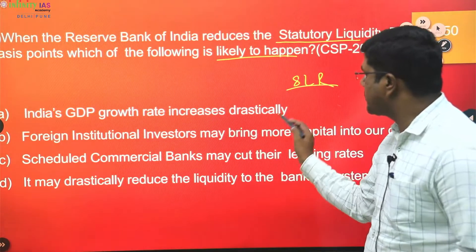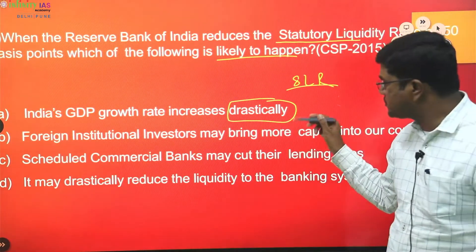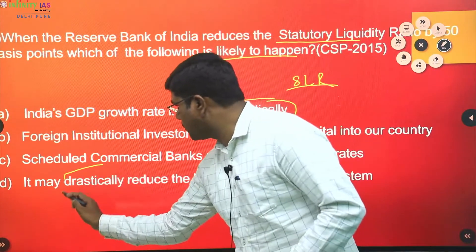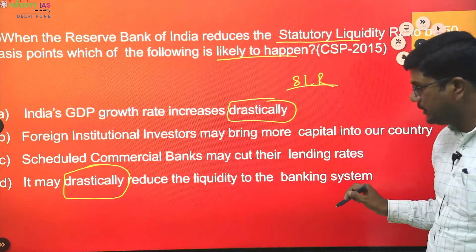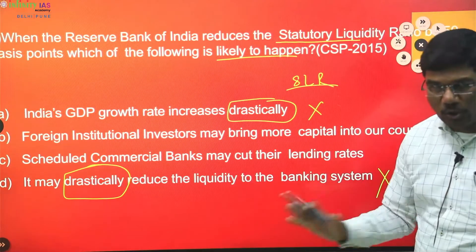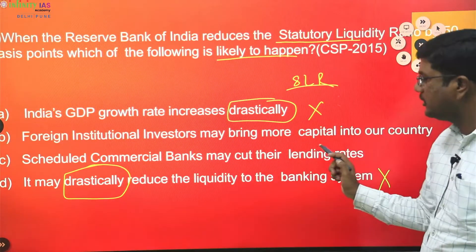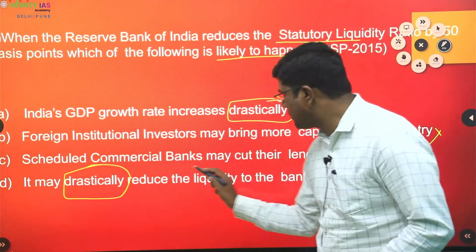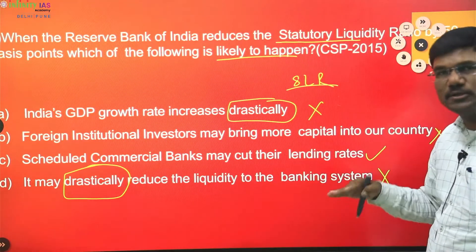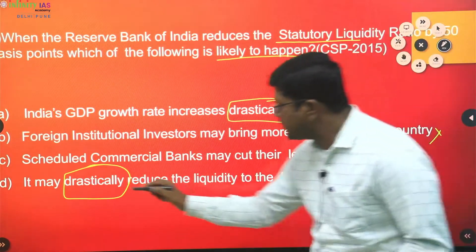See the options. Option: India's GDP growth rate increases drastically — 'drastically' is an extreme word. Last option: it may drastically reduce liquidity to the banking system — again an extreme word. Whenever extreme words appear, chances are high the statement is wrong. Foreign institutional investors may bring more capital — that has nothing to do with RBI reducing SLR. Scheduled commercial banks may cut their lending rates — obviously, if RBI cuts SLR, commercial banks may cut their lending rates. So the answer is option C.